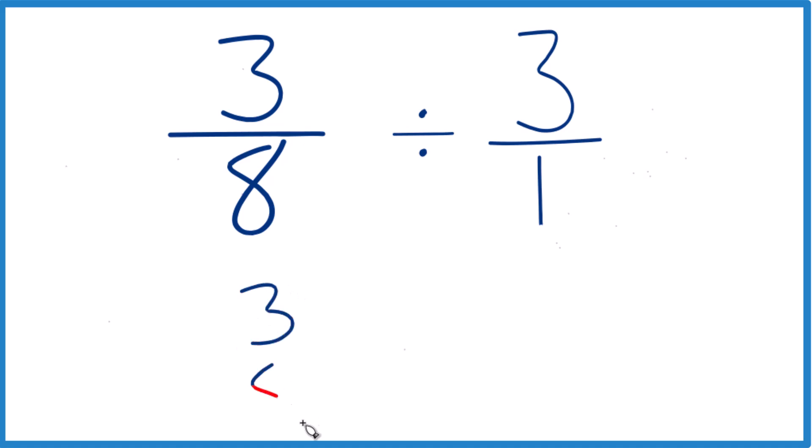Take the three eighths, and instead of division, we're gonna multiply. We're gonna multiply by the reciprocal of three over one. Numerator goes to the bottom, denominator to the top. So we have one over three. That's just one third.